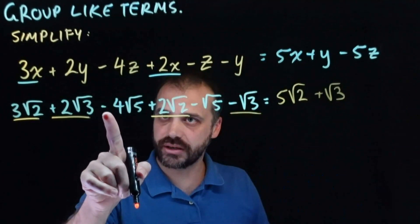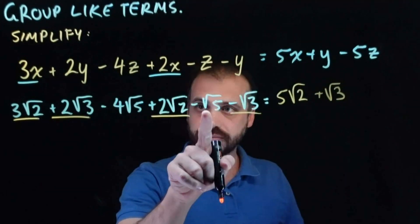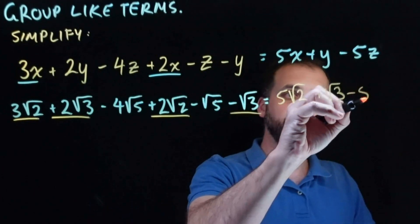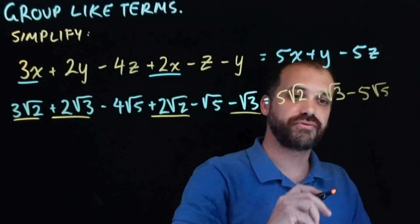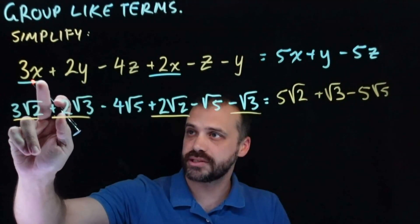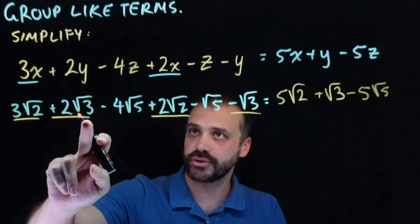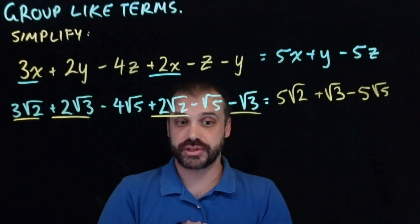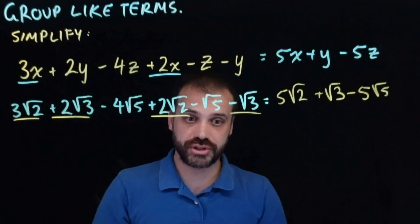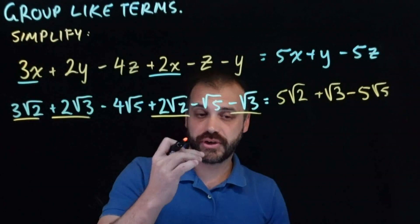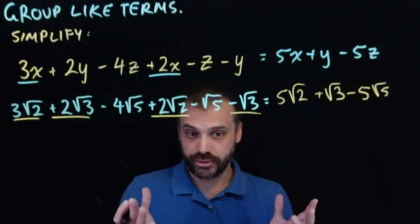And here we have negative 4 root 5 and negative root 5, so that's negative 5 root 5. If you're not seeing what I've done here, I've just replaced the x with a root 2, a y with a root 3, and a z with a root 5, because it totally works the same. Figure out how many root 2s you've got and group them together. Figure out how many root 3s you've got and group them together. Figure out how many root 5s you've got and group them together.